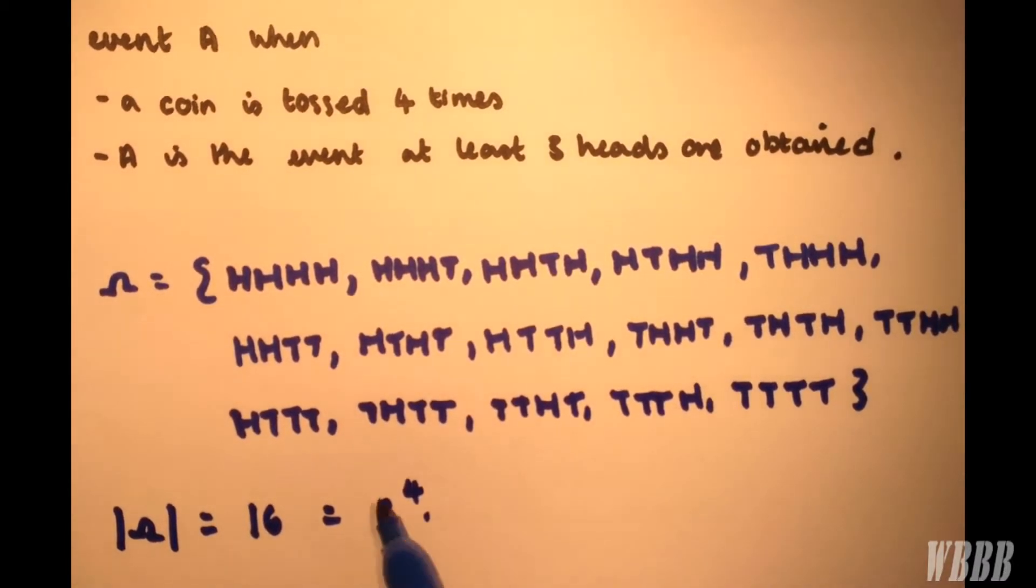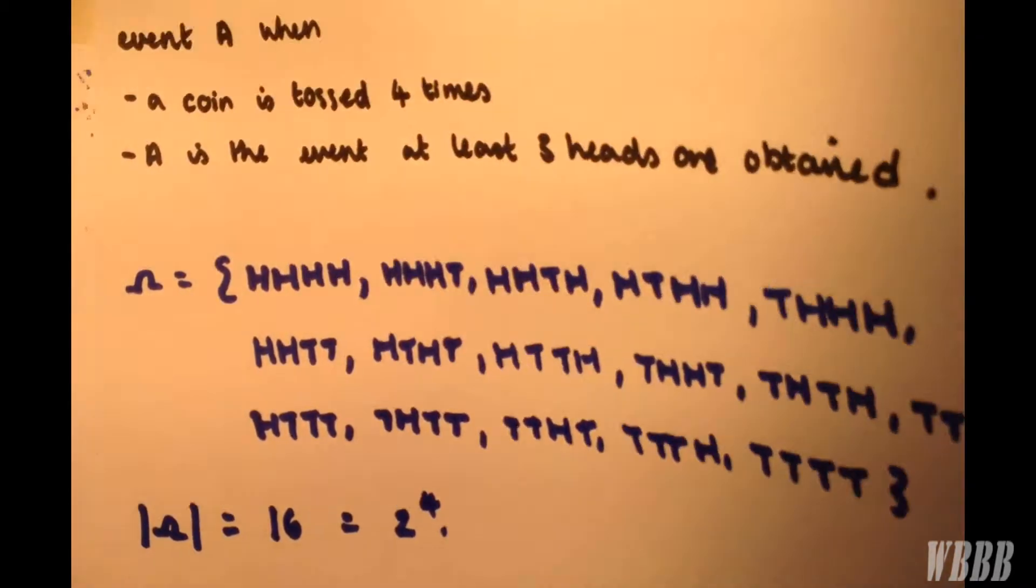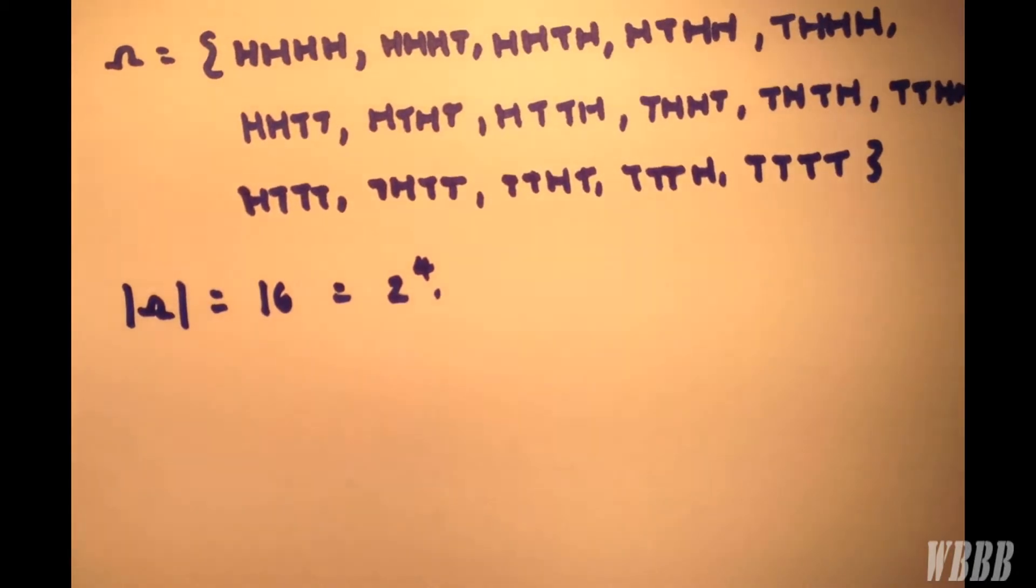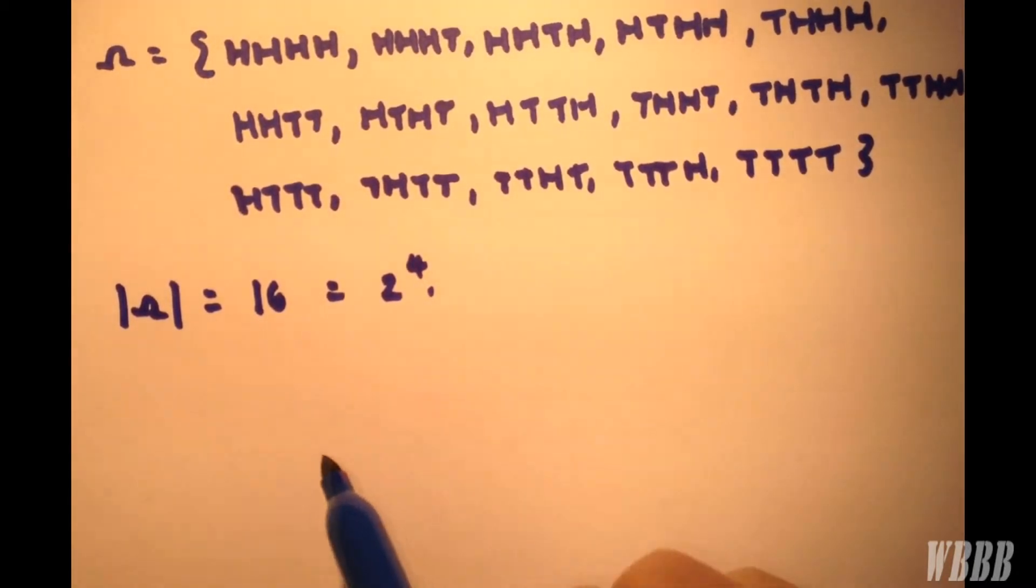So the number of outcomes times by the number of times we repeat this event. And event A being that at least three heads are obtained.